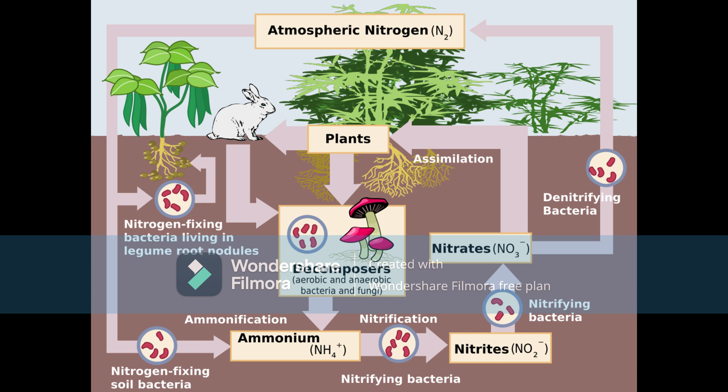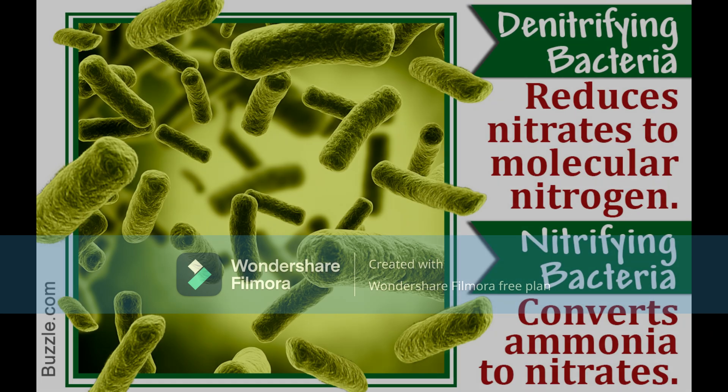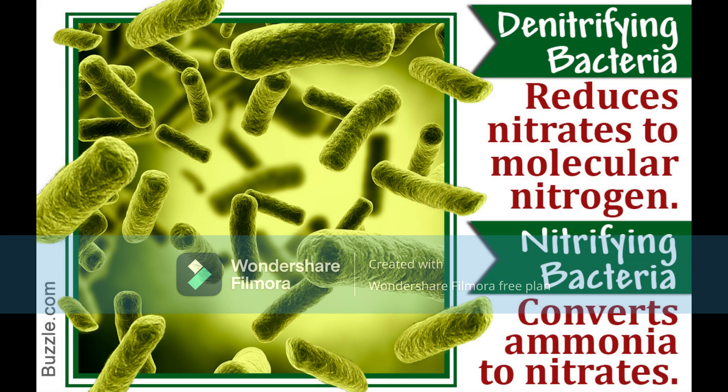To go into more detail, we first need to have an understanding of the meaning of a few words, then the rest of the information in this video will be much easier to understand. First, we need to know what nitrifying and denitrifying bacteria are. Nitrifying bacteria are microorganisms that are important in the nitrogen cycle, as they convert ammonia to nitrates.